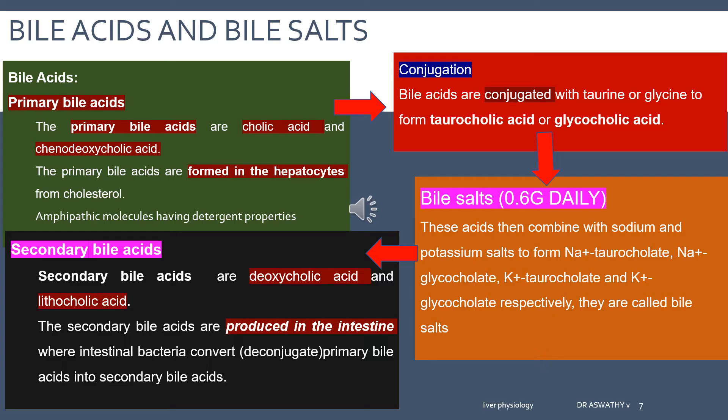These bile salts are secreted into the bile, and through the bile they reach the intestine — duodenum, then jejunum, then ileum and then colon. In the terminal ileum and colon, these bile salts get deconjugated back into primary bile acids. Some amount of the primary bile acids will be absorbed back into the portal circulation. The remaining amount of bile acids will be acted upon by intestinal bacteria, which convert them into deoxycholic acid and lithocholic acid — the secondary bile acids.